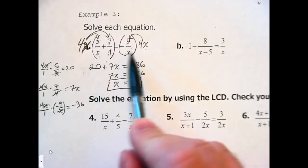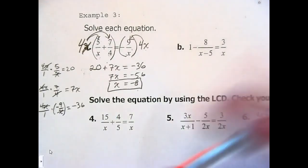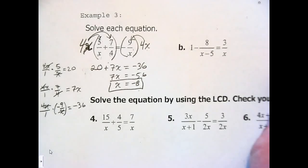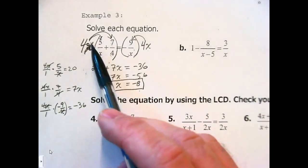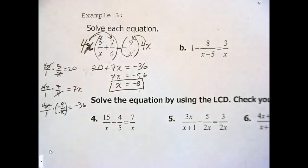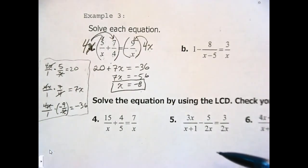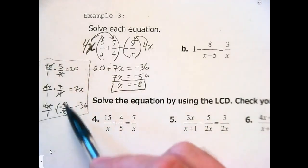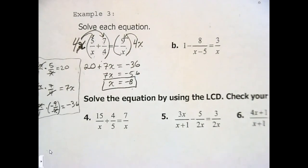Then 4x times −9/x: (4x/1) × (−9/x) — the x's cancel and I'm left with 4 times −9. Notice that by multiplying by 4x, you eliminate the fractions and you're left with just a linear equation. Subtract 20, divide by 7, and x = −8. The restriction here is x cannot be 0. Is it 0? No — so we're okay. You can always plug it back in and check that each side of the equation is the same.